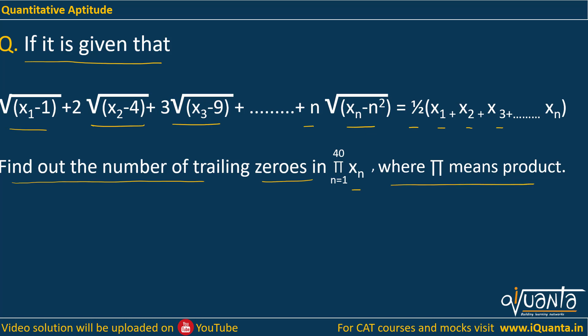That means we just have to multiply x₁, x₂, x₃ up to x₄₀ and then find out the number of trailing zeros in that.